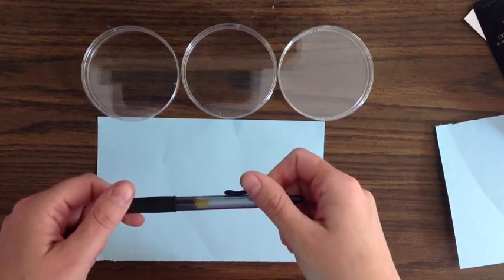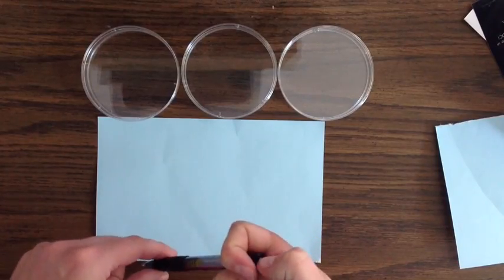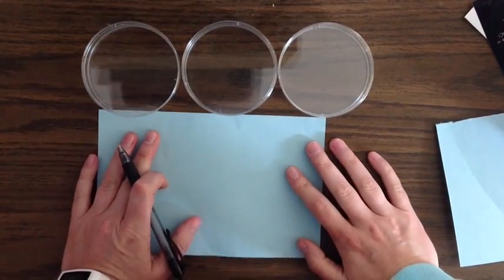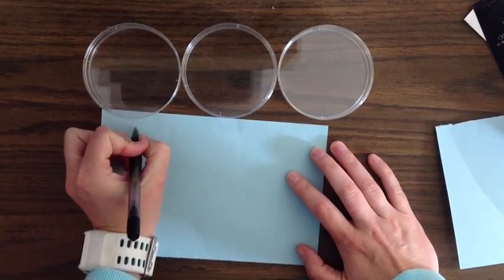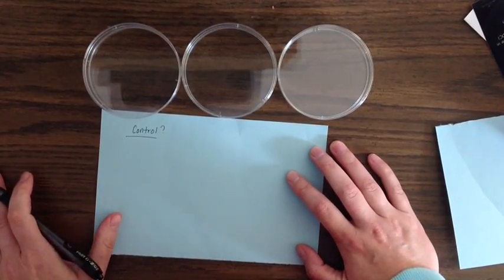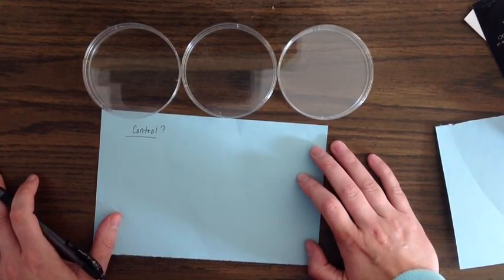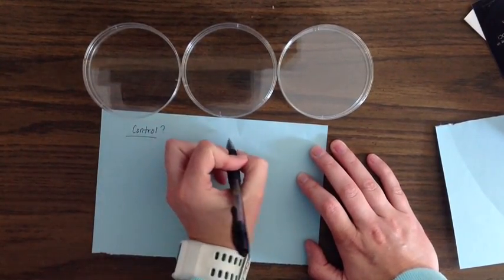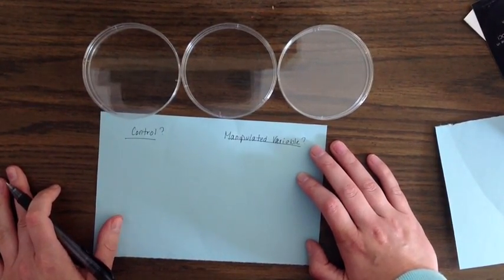Hi class! Today we're going to talk about the scientific method and some different parts. One of the more confusing parts that students have is the control. What is the control and when and how do we use it in the scientific method? The other big one is the manipulated variable. When do you use it and what's the difference between the two?